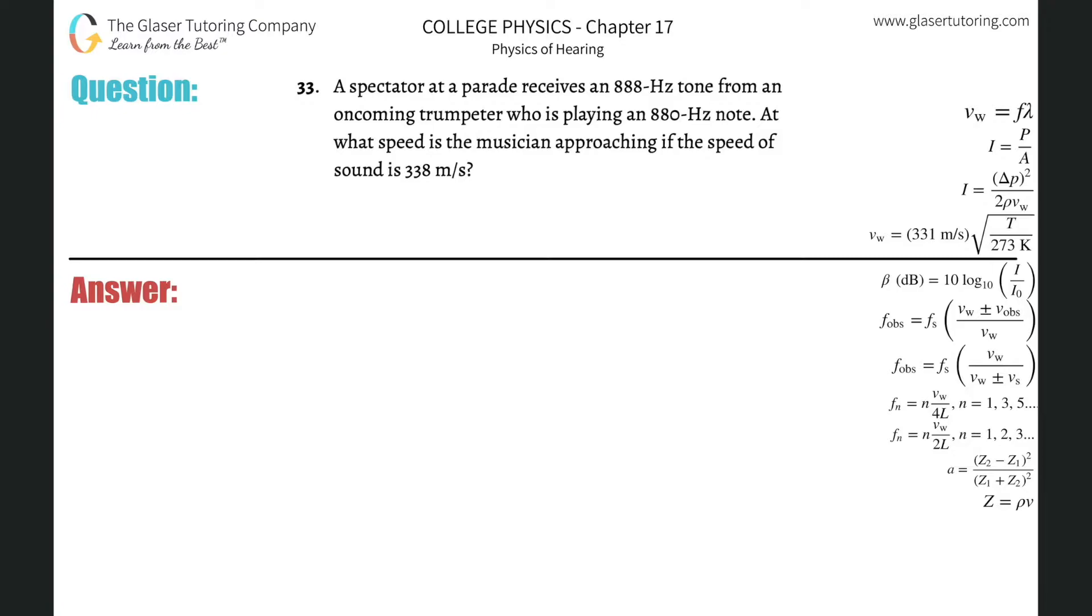Number 33. A spectator at a parade receives an 888 hertz tone from an oncoming trumpeter who is playing an 880 hertz note. At what speed is the musician approaching if the speed of sound is 338 meters per second?